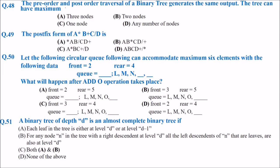The pre-order and post-order traversal of a binary tree generate the same output. The tree can have a maximum of how many nodes? The answer is only one node, because only a single node can yield identical pre-order and post-order traversal outputs. With more nodes, the output would be different.